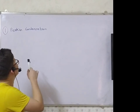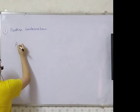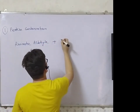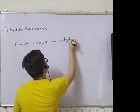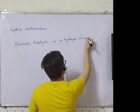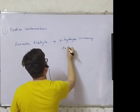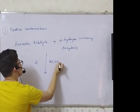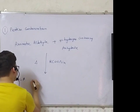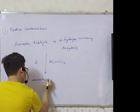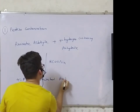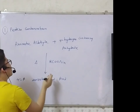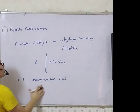The first reaction we are discussing today is Perkin Condensation. The reactants are an aromatic aldehyde plus an alpha-hydrogen-containing anhydride. The condition given is heat and a salt of the acid (RCOO⁻). The product we get is an alpha-beta unsaturated acid.